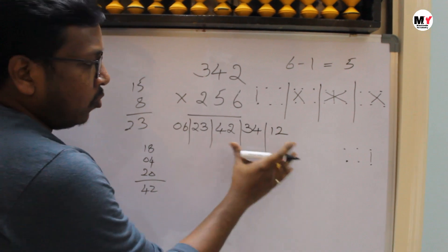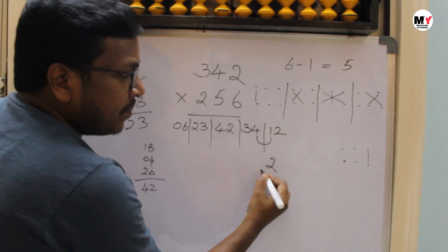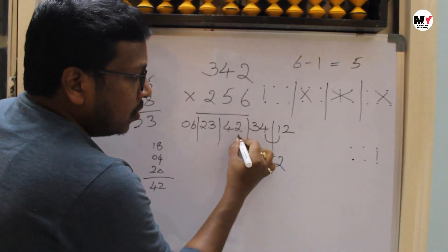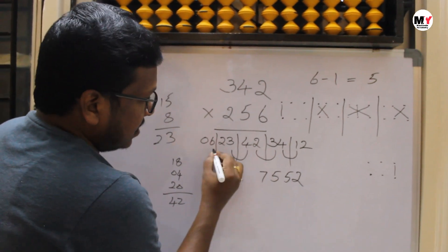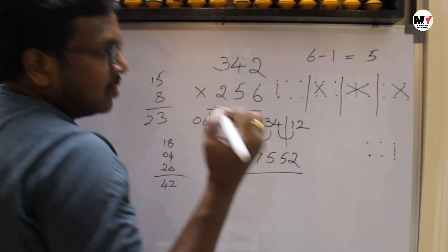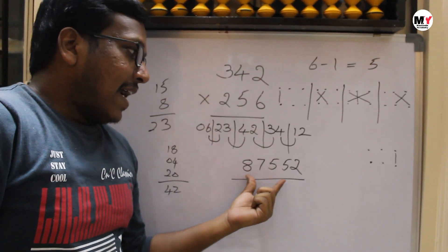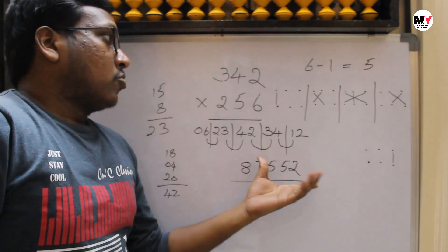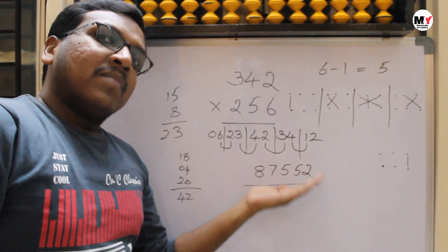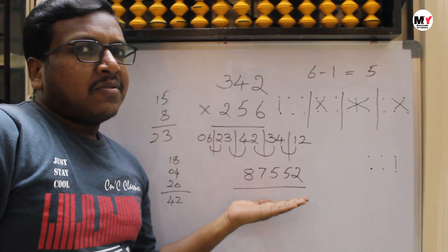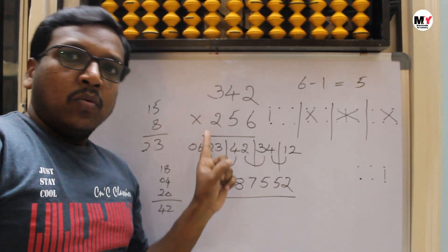Now we have to balance this one. The same method: last digit 2 as it is. 4 plus 1 is 5. 2 plus 3 is 5. 3 plus 4 is 7. And then 6 plus 2 is 8. So when we multiply 342 into 256, the answer is 87,552. The answer will be in five or six digits, with minimum five steps.